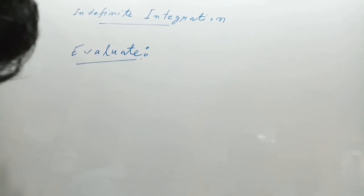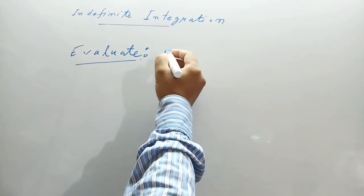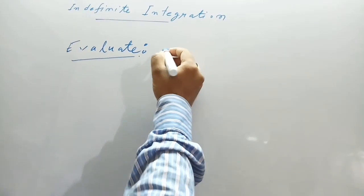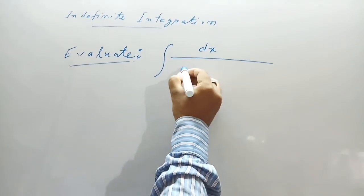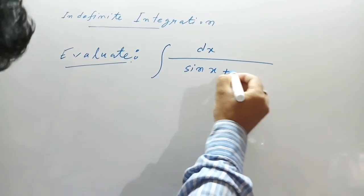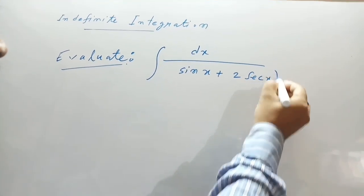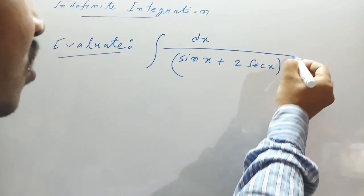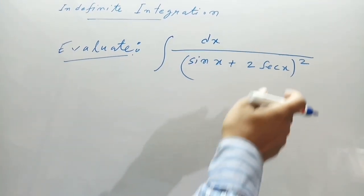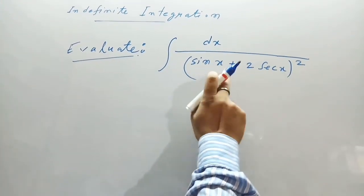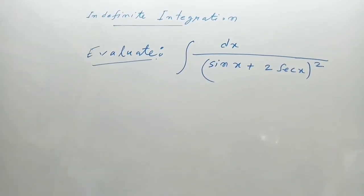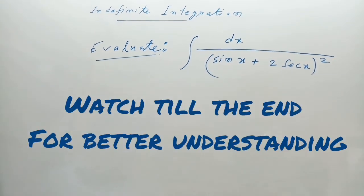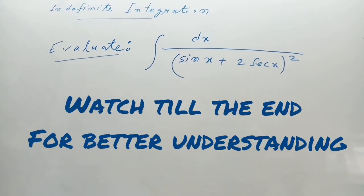Now I will show an integration problem: find the integral of dx divided by (sin x + 2 sec x) whole square. We need to find the integral value of the function 1 divided by (sin x + 2 sec x) whole square. This is very important for joint entrance exams of any type or any state.